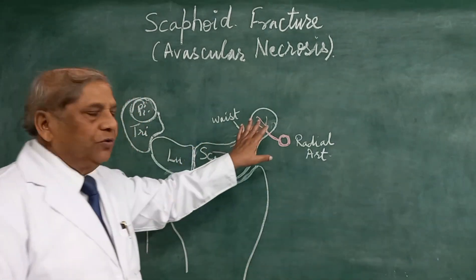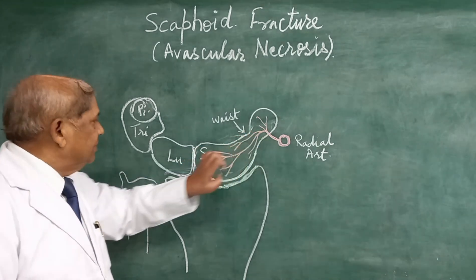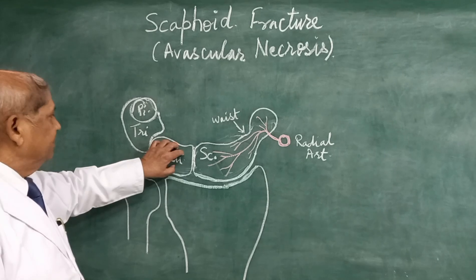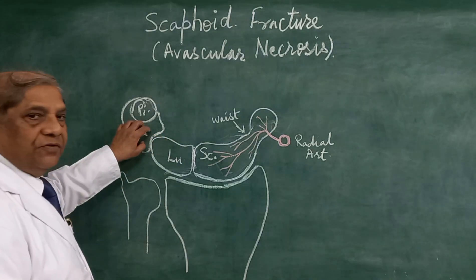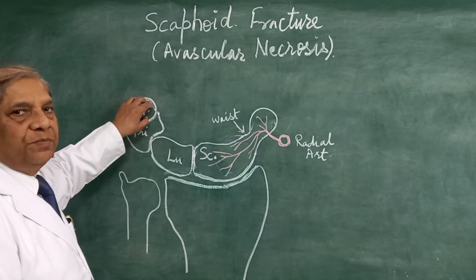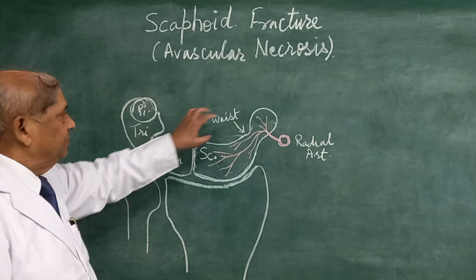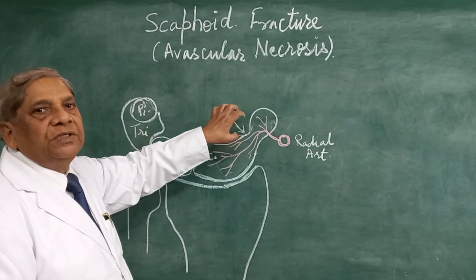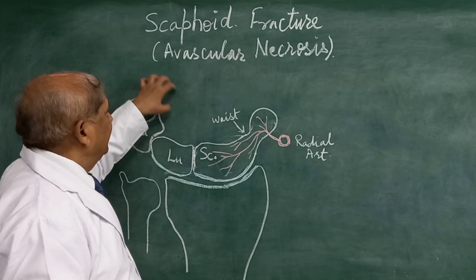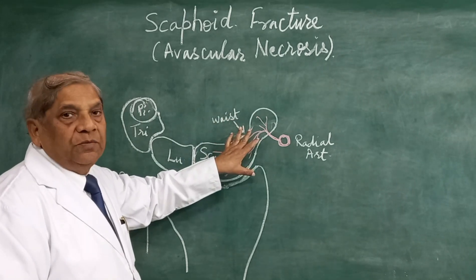If you see the scaphoid bone, this is a boat-shaped structure. This is the lunate bone in the proximal row of the carpals, this is the triquetral bone, and this is the sesamoid bone — the pisiform. So these are the four bones of the proximal carpal row. The other four bones in the distal row are the trapezium, trapezoid, capitate, and hamate.